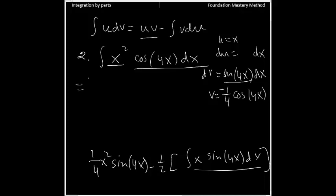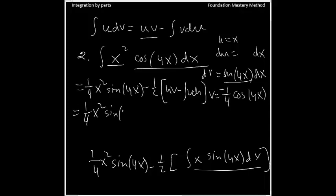We need to do integration by parts twice because this came back here. So again, I have one-fourth x squared sine 4x minus one-half. Now I have new udv, so this one again will give me uv minus integral v du. You see, one-fourth x squared sine 4x minus one-half, now u is x, your v is negative one-fourth cosine 4x.